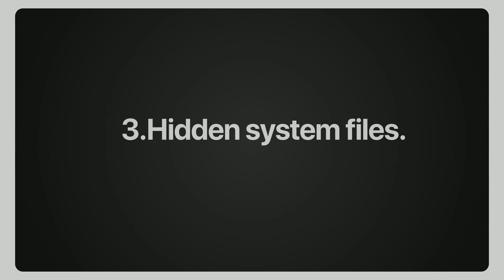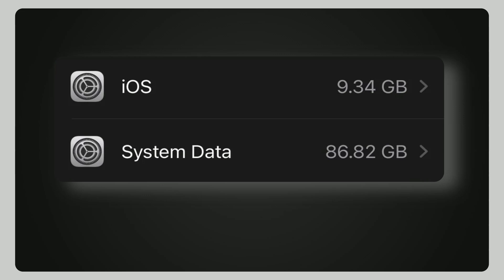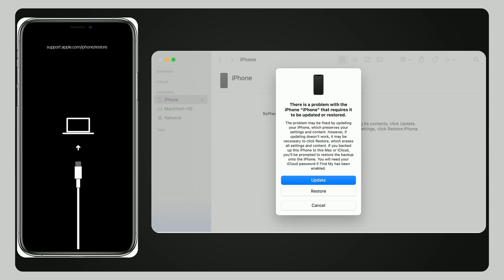Third, hidden system files. If system data remains high after all other steps, hidden system files or iOS glitches might be the cause. The last option is to restore your iPhone using DFU mode for a complete reset. For a step-by-step DFU restore guide, check out this video.